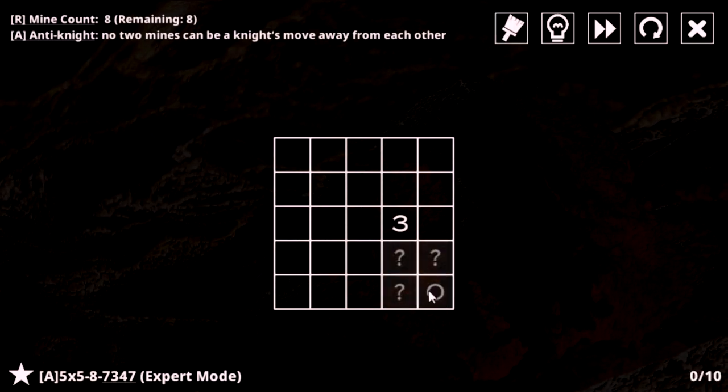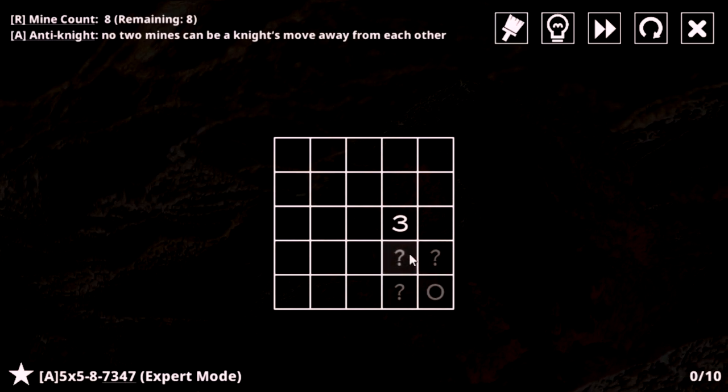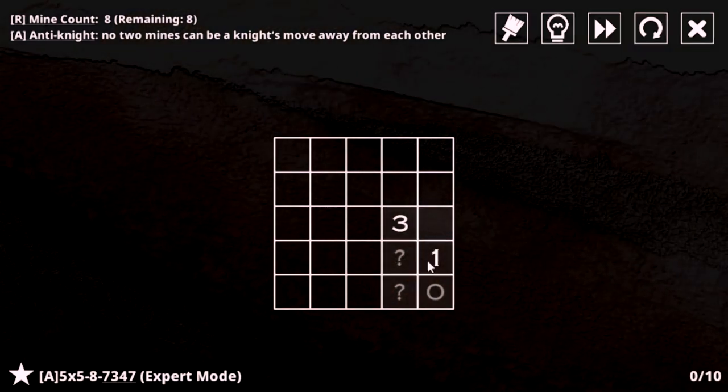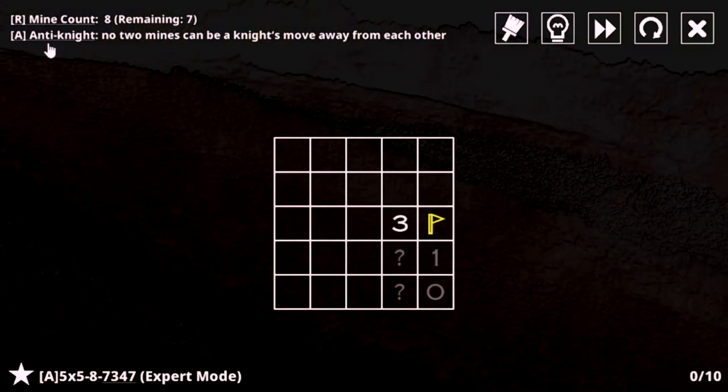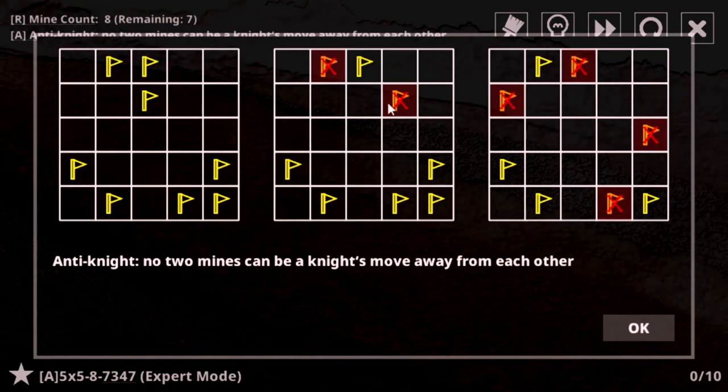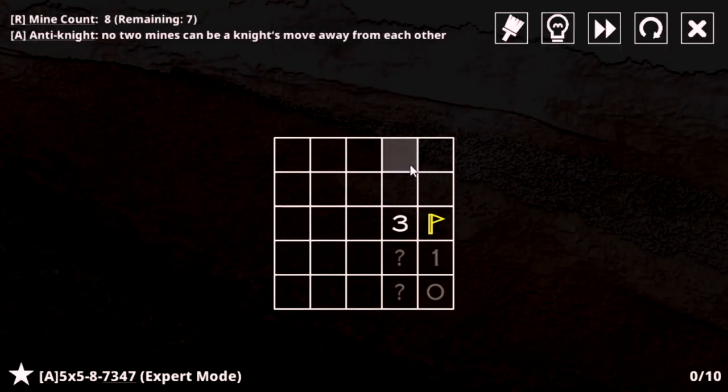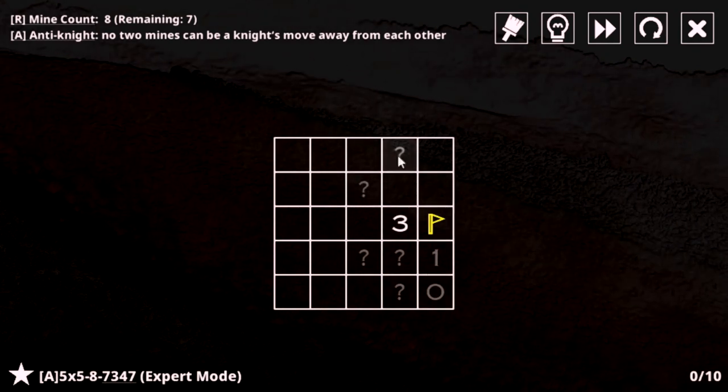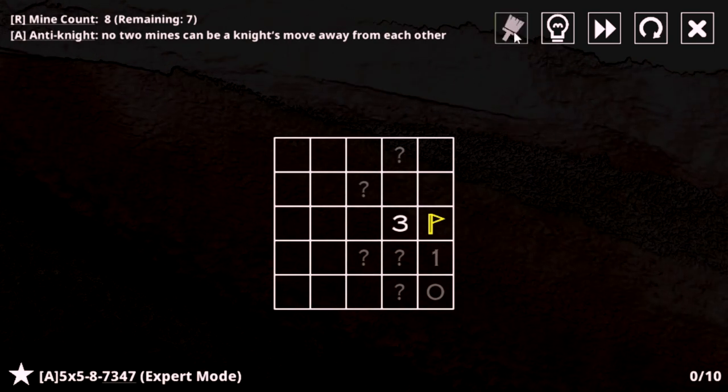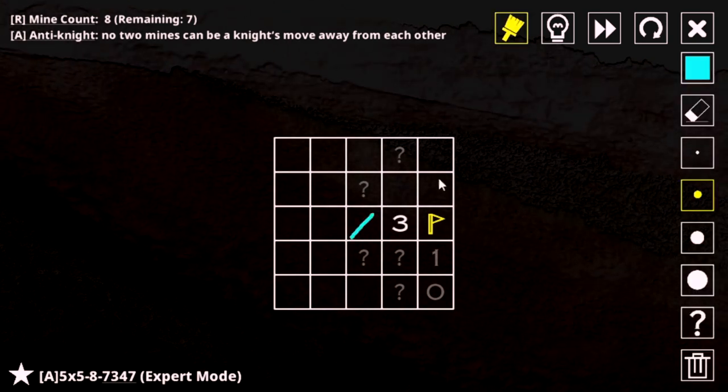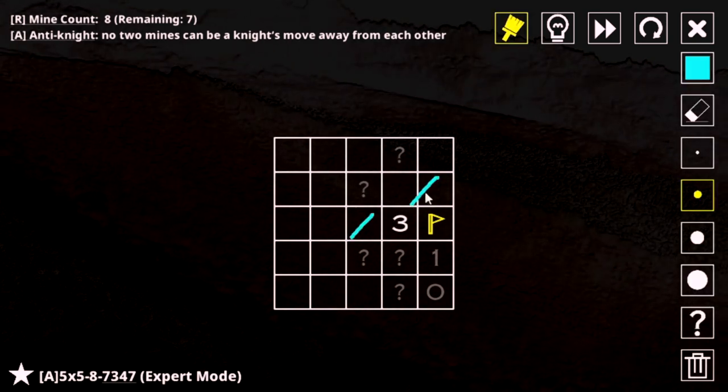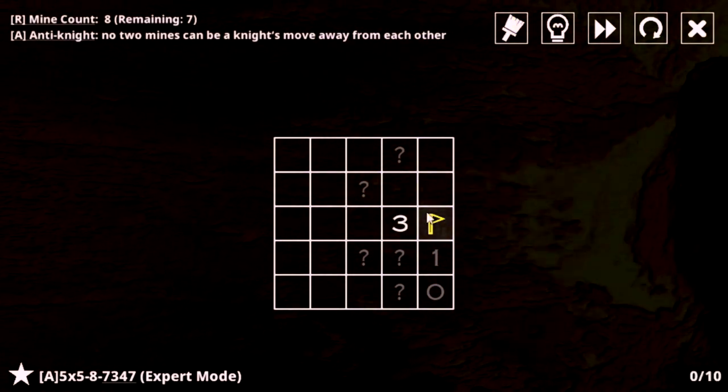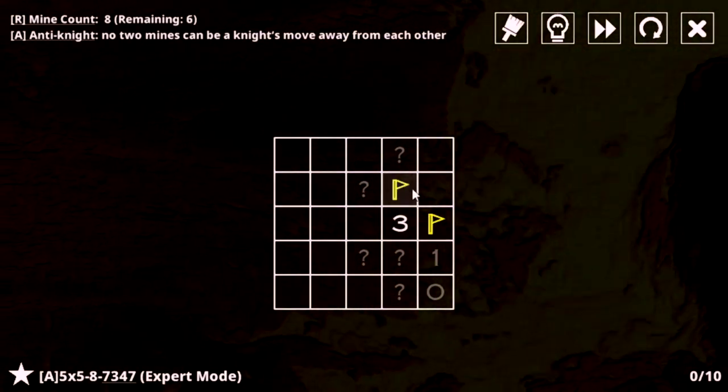So, this zero means no mines are adjacent to it, so I can mark it, and now I have no other deductions possible, so I need to click this, and then a new number will be revealed. Now, we are playing the Anti-Knight variant, which prevents mines from being a Knight's move away from each other. This means there are no mines in the Knight's move away from this mine, and we can't have both of the mines like this, because those would be a Knight's move away, and this three means that one of these has to be a non-mine, so it's one of these, and therefore that's on.